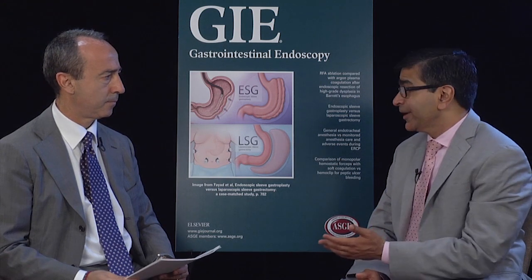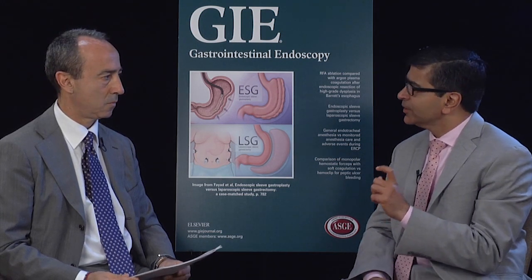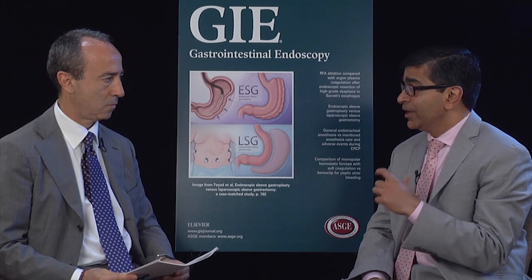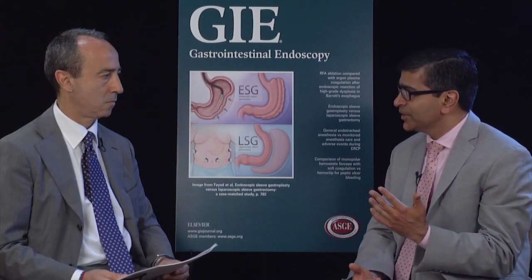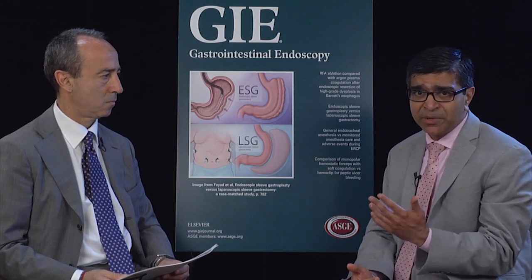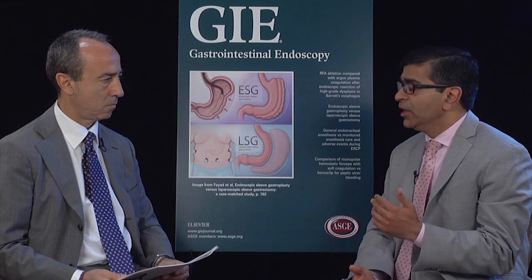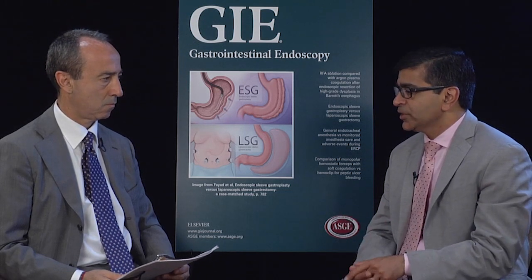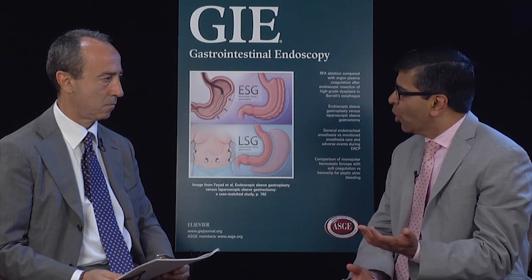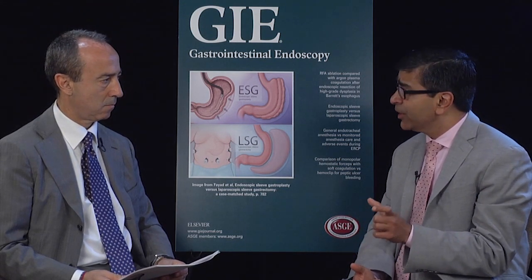I want to start off by thanking Dr. Rebucci and Gastrointestinal Endoscopy for this opportunity to talk about our research, and I represent all the co-authors on this paper. The reason why we felt this was an important question is because the guidelines for management of patients with non-dysplastic Barrett's esophagus categorically state that you should be obtaining biopsies using the Seattle Biopsy Protocol — every two centimeters in a four-quadrant fashion. This has also been proposed as a quality indicator, a benchmark in clinical practice. Up until recently we really had only small studies answering how well we're performing as endoscopists with regards to this quality indicator.